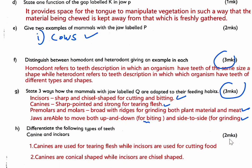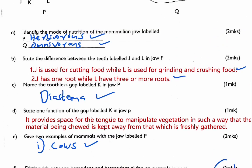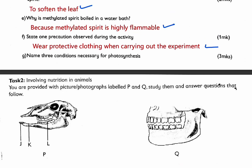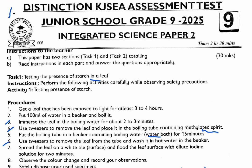Finally, the last question asks: differentiate between canine and incisor teeth — two marks. In terms of function, canines are used for tearing flesh while incisors are used for cutting food. In terms of structure, canines are conical shaped while incisors are chisel shaped. Those are the main differences between canines and incisors. That is the end of this paper. Thank you for watching — don't forget to like and subscribe, and tell us which paper you want us to do next. See you in the next video. Best wishes.